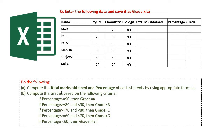Task A: compute the total marks and the percentage of students using appropriate formula. Also compute the grades based on the following criteria. If the percentage is greater than or equal to 90, give grade A. If greater than or equal to 80 but less than 90, grade B. If greater than or equal to 70 but less than 80, grade C. If greater than or equal to 60 and less than 70, grade D. If less than 60, grade is Fail.